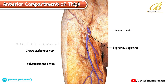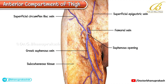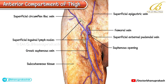The superolateral vein is the superficial circumflex iliac vein. The vein draining from the abdominal wall is the superficial epigastric vein. The tributary on the medial aspect is the superficial external pudendal vein. In addition, superficial inguinal lymph nodes can be observed near the inguinal region, close to the saphenous opening.